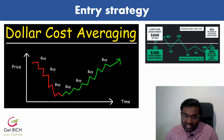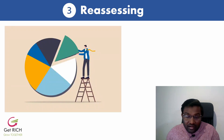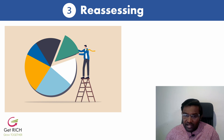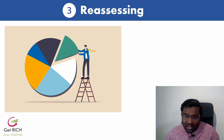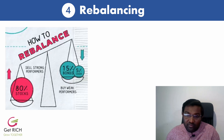Always consider dollar cost averaging as your entry strategy. If you want to do a lump sum, start with 25 to 33% and accumulate gradually. For reassessment of the portfolio, you have to regularly track it — read quarterly and annual reports, check the news, and periodically assess asset valuation. If a stock price has risen significantly, evaluate whether it is now undervalued or overvalued and whether it still makes sense to hold.